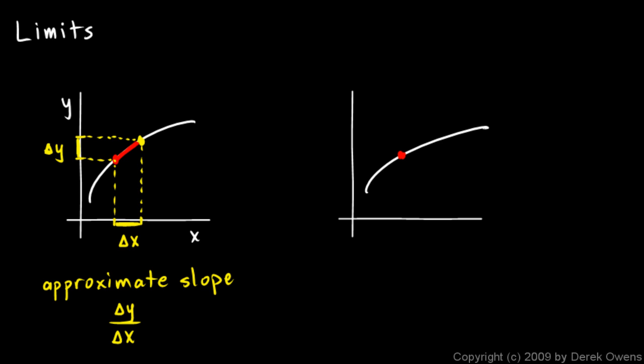Well, Newton and Leibniz imagined taking, instead of this interval here delta x, take an infinitely small interval. And we'll call that dx. So think of dx as an infinitely small delta x.